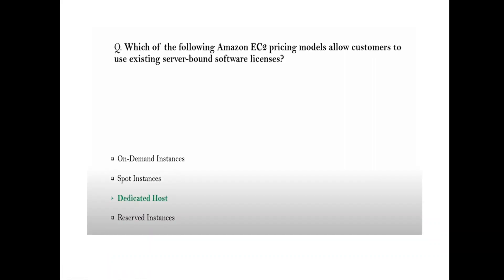Question: Which Amazon EC2 pricing model allows customers to use existing server-bound software licenses? The keyword is 'existing server-bound.' For this, you select a Dedicated Host. Whenever you see 'existing server-bound,' always go for Dedicated Host.